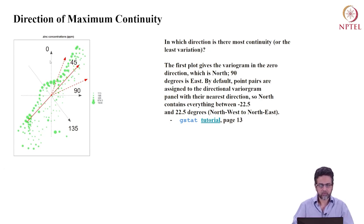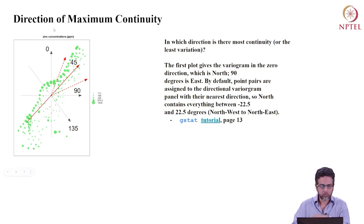You can look at these cardinal directions. In the gstat package, 0 means north, 90 is east, 45 is northeast, and 135 is southeast. This is from the gstat literature — you can find it on page 13 of the tutorial linked here. Note that 0 covers both north and south — it's the north-south direction. So 0 to 135 covers everything — you only need those four values to cover the whole range.